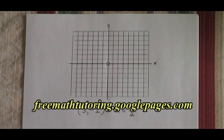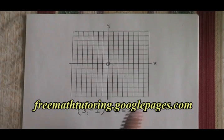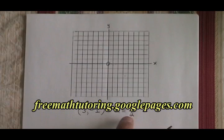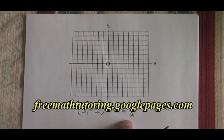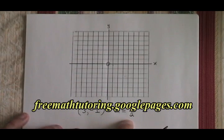The rise over run trick allows us to graph a straight line so long as we have a starting point and the slope in the form of a fraction. It's a very easy trick, so we'll do several examples to make sure that we're ready to deal with it no matter how the question is asked.